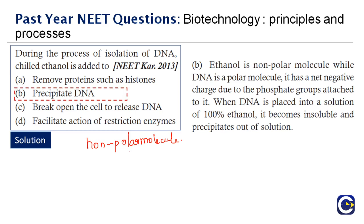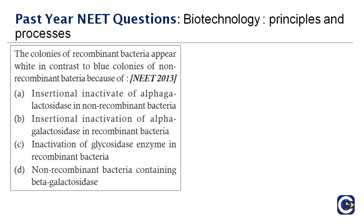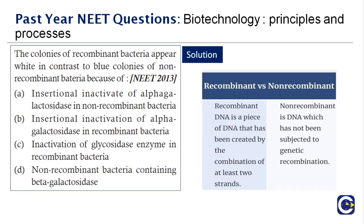Next question: the colonies of recombinant bacteria appear white in contrast to the blue colonies of non-recombinant bacteria because of blank. Recombinant DNA is created by combining at least two DNA strands, while non-recombinant DNA has not been subjected to recombinant technology. Non-recombinant bacteria contain beta-galactosidase, which is why they appear blue. The correct answer is option D.